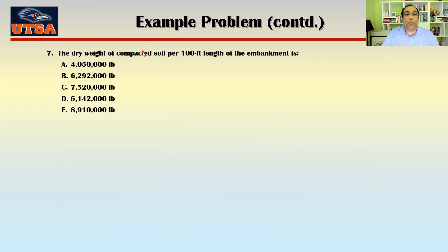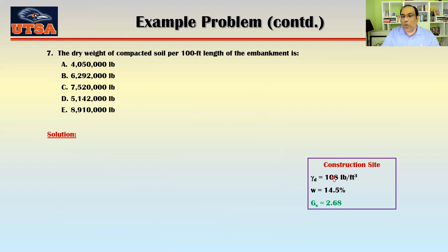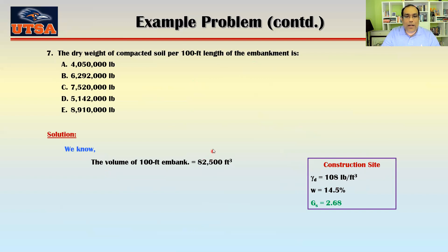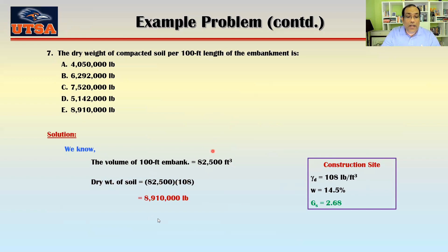For the dry weight of compacted soil per 100 feet length of the embankment: we know the dry unit weight at the compacted site is 108 pcf, and the total volume per 100 ft length is 82,500 cubic feet. So the total dry weight is 82,500 × 108 = 8,910,000 pounds.